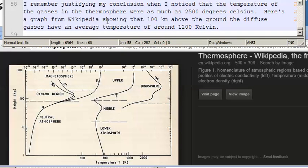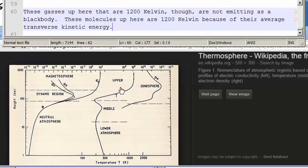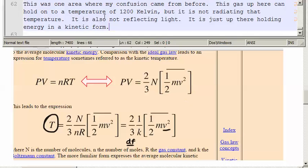I even remember justifying my conclusion when I noticed that the temperature of the gases in the thermosphere were as much as 2500 degrees Celsius. Here's a graph from Wikipedia showing that above 100 kilometers from the ground, the temperature of the diffuse gases have an average temperature of around 1200 kelvin. These gases up here that are 1200 kelvin, though, are not emitting as a blackbody. These molecules up here are 1200 kelvin because of their average transverse kinetic energy. This is one area where my confusion came from before. The gas up here can hold onto a temperature of 1200 kelvin, but it's not radiating the temperature.